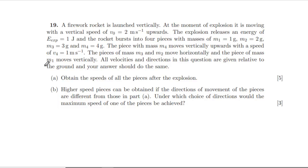Firework rocket launched vertically. The moment of explosion is moving with vertical speed v₀ = 2 meters per second upwards. Explosion releases an energy of 1 joule, so we've got 1 joule appears, and the rocket bursts into four pieces.